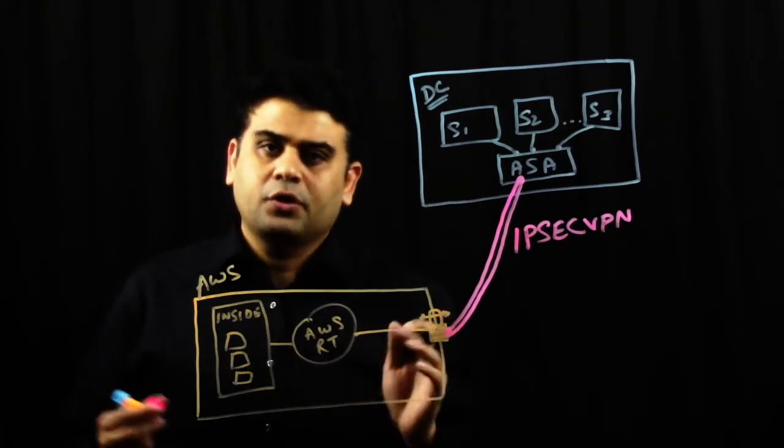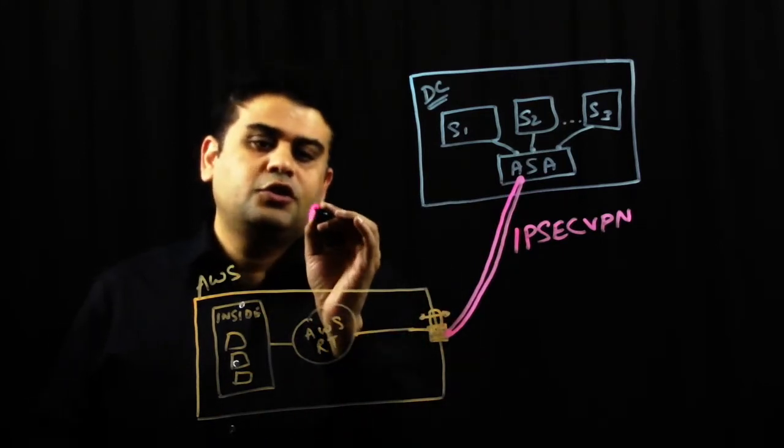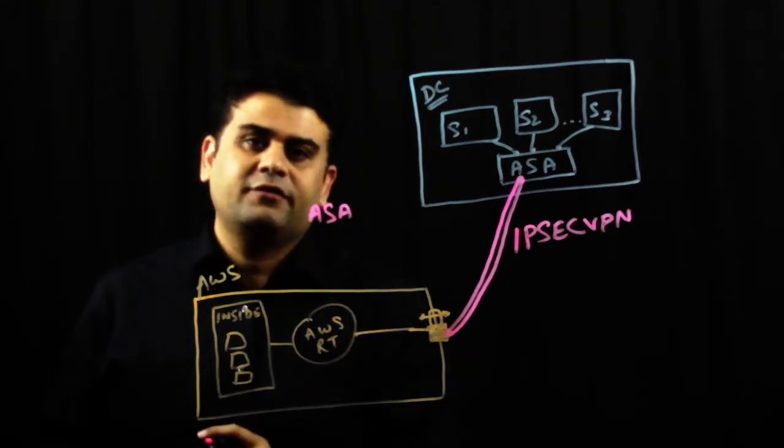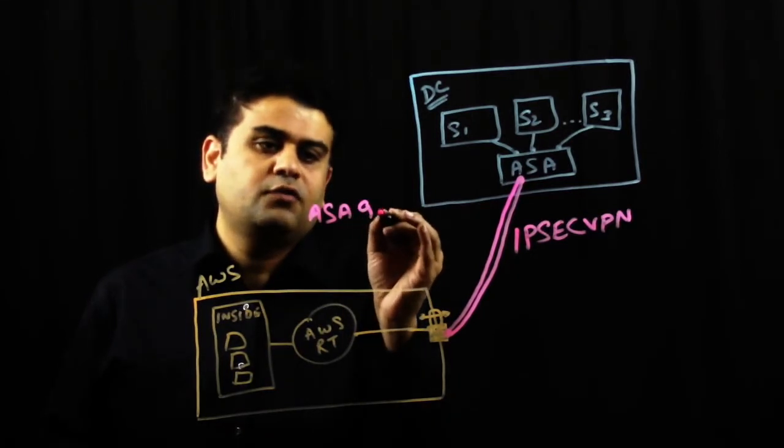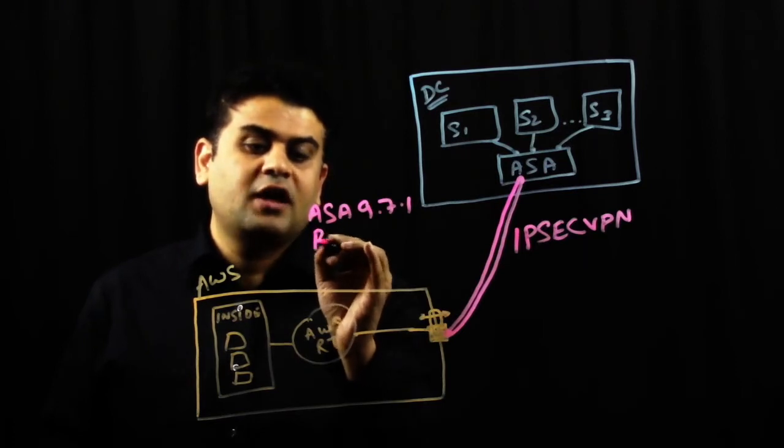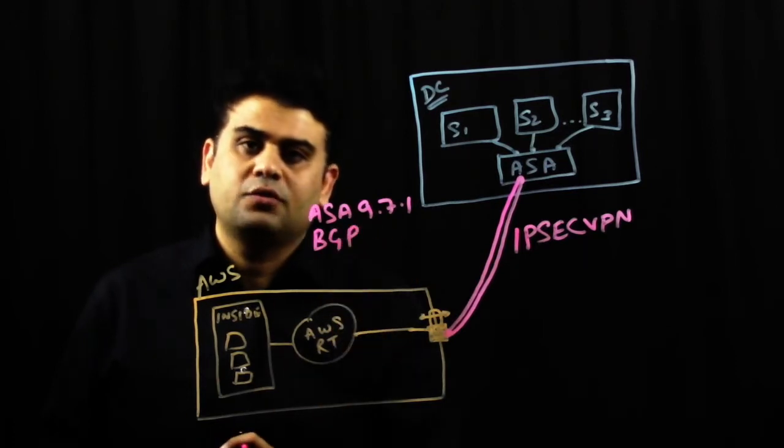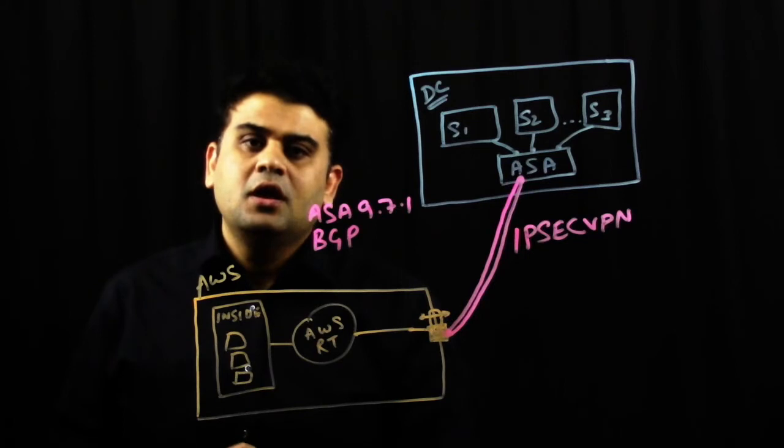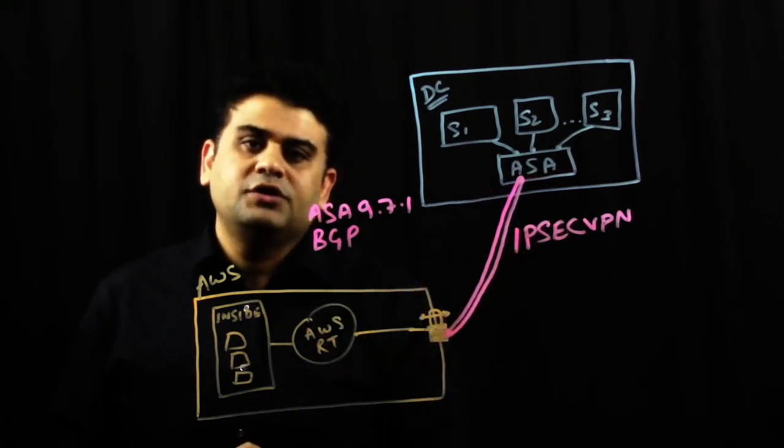There are a couple of prerequisites. First of all, you need to make sure that ASA that you have on-prem should run version 9.7.1 or plus. And you should have BGP protocol running so that you can advertise your routes.